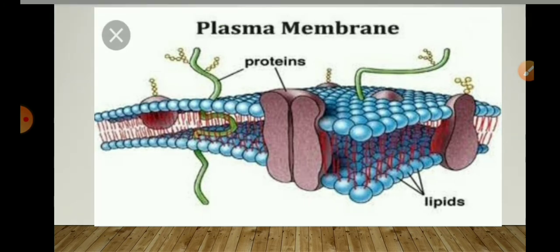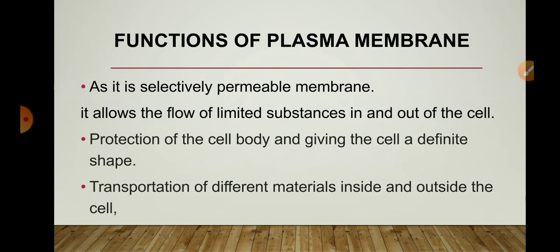Now we will see the functions of the plasma membrane. It is a selectively permeable membrane, so it allows the flow of limited substances in and out of the cell — such as allowing oxygen into the cell, carbon dioxide (a cellular waste) to move out, and permitting entry of water and glucose. It protects the cell body and gives the cell a definite shape, as it is the outermost layer. It also facilitates transportation of different materials inside and outside the cell.